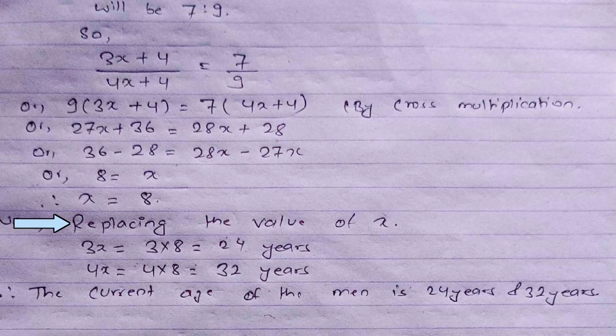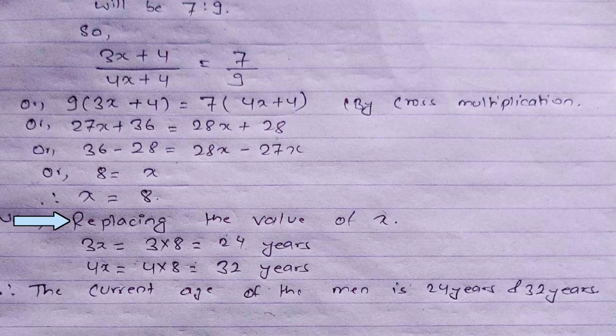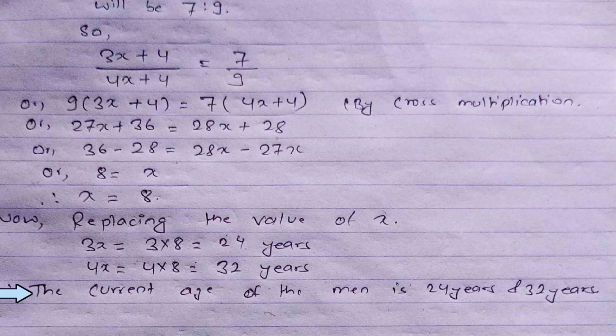Substituting x equals 8: the first man's current age is 3 times 8 equals 24 years, and the second man's current age is 4 times 8 equals 32 years. Therefore, the current ages of the two men are 24 and 32 years respectively.